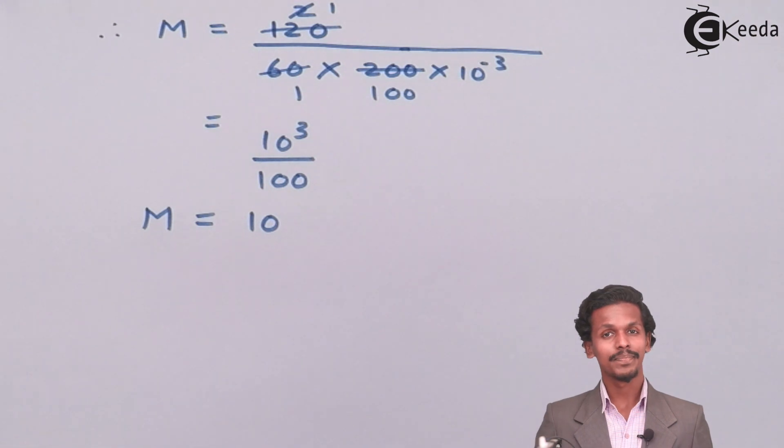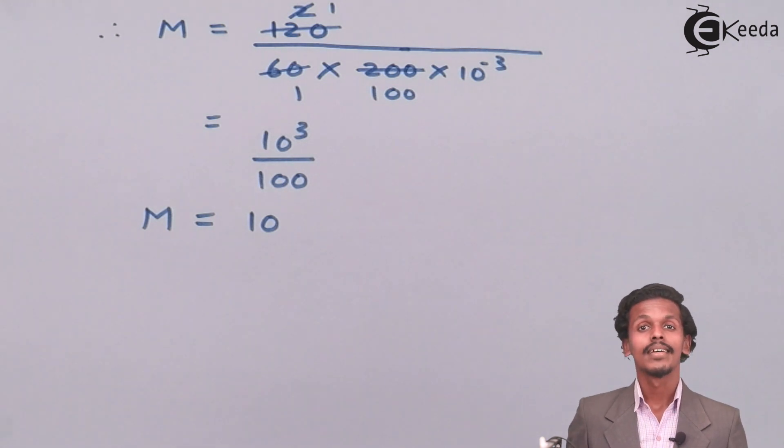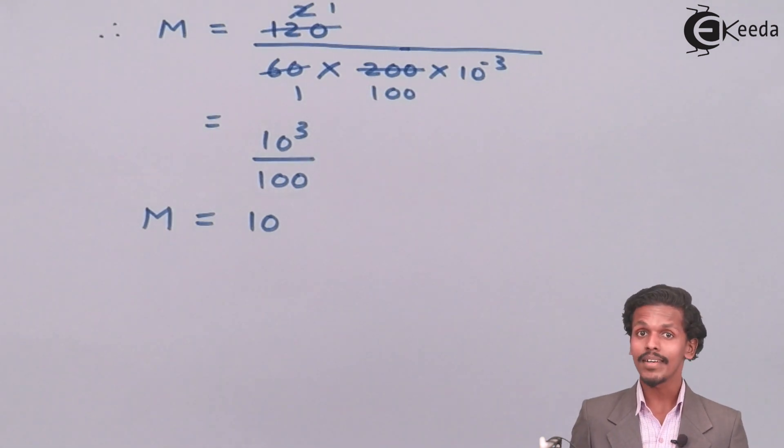It's 10. The value of molarity will be 10 moles per dm³.